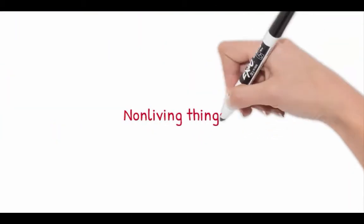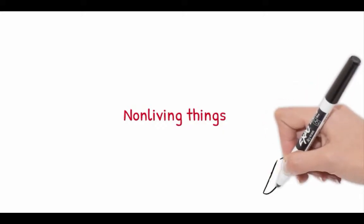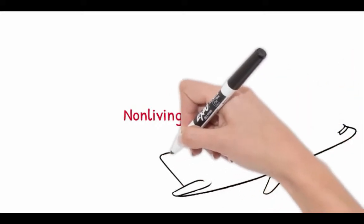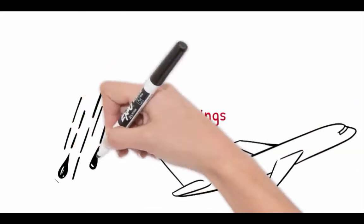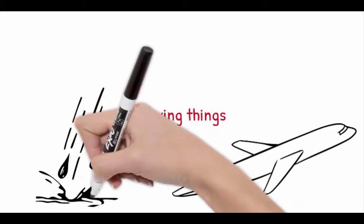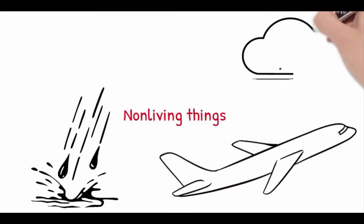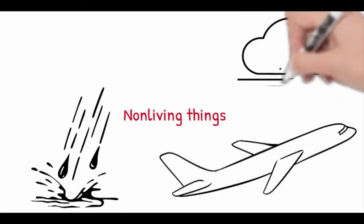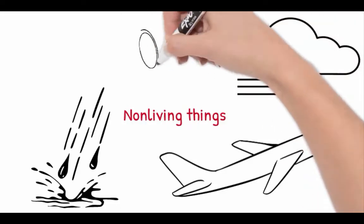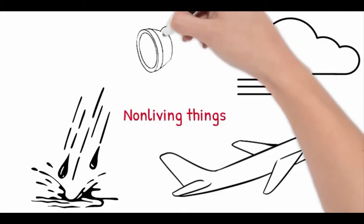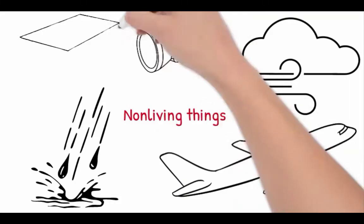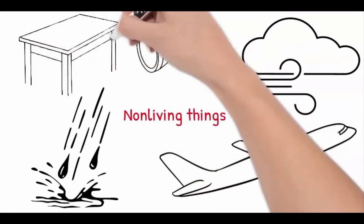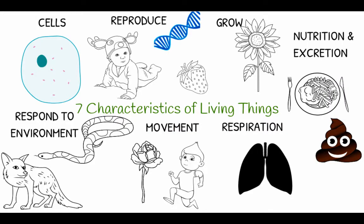So if these are all the characteristics of living things, what makes something non-living? Non-living things are not made up of cells, they don't reproduce, they don't grow as they age, they don't take in nutrients, they don't excrete waste, they don't respirate or breathe, they don't move without an external force being applied, and they don't respond to the environment.